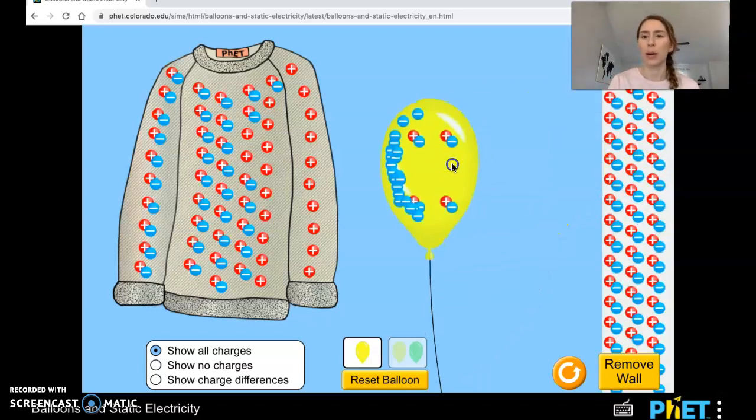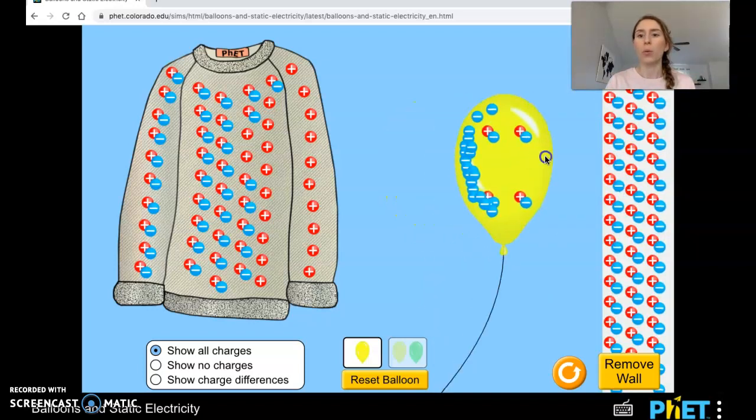So the wall itself is not overall charged. We can see that as I move the balloon away. It's neutral, but when the balloon comes in contact with it, it becomes what's called polarized. The charges are unbalanced in that area. That's why now the negative balloon sticks to the polarized wall.